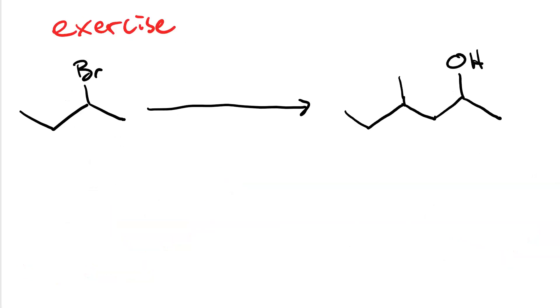Let's do an exercise. We have 2-bromobutane, and we're trying to make 4-methyl-2-hexanol. Let's see. One, two, three, four, five, six. Yes, 4-methyl-2-hexanol.